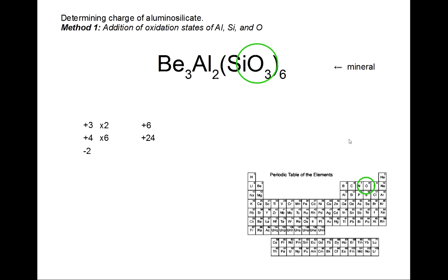The oxygen is in group 6, therefore has an oxidation state of minus 2. There's 3 times 6 for 18, times that by the oxidation state of minus 2 for a total of minus 36.